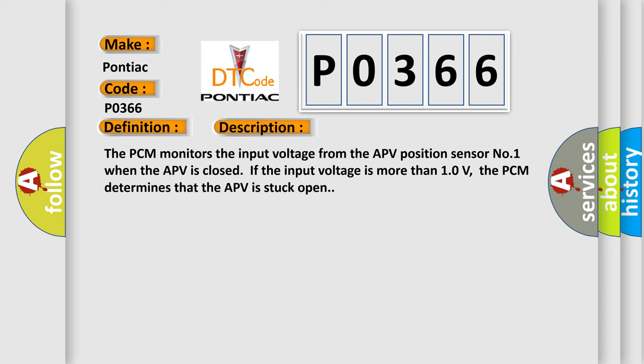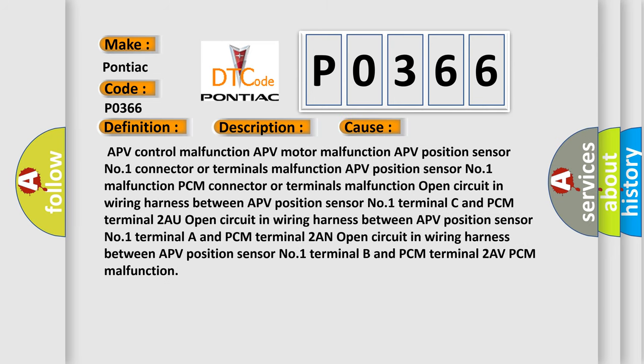This diagnostic error occurs most often in these cases: APV control malfunction, APV motor malfunction, APV position sensor number one connector or terminals malfunction, APV position sensor number one malfunction, PCM connector or terminals malfunction, open circuit in wiring harness between APV position sensor number one terminal C and PCM terminal 22, open circuit in wiring harness between APV position sensor number one terminal A and PCM terminal 2AN, open circuit in wiring harness between APV position sensor number one terminal B and PCM terminal 2AV, or PCM malfunction.